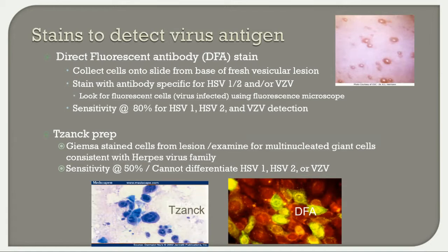Let's talk about stains to detect virus antigens. We can use direct fluorescent antibody staining, known as DFA, particularly for herpes simplex 1 and 2 and varicella zoster virus. You need fresh vesicular lesions — collect cells at the base of the lesion, put them on a microscope slide, stain with fluorescent antibody for the specific virus, then examine under a fluorescent microscope for fluorescent cells. The sensitivity is around 80 percent for HSV 1, 2, and VZV detection.